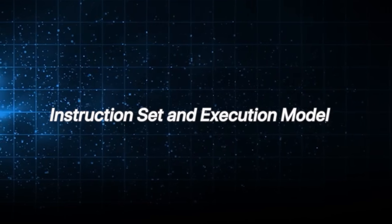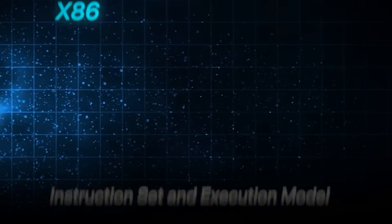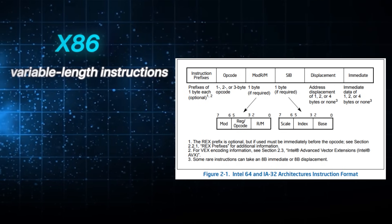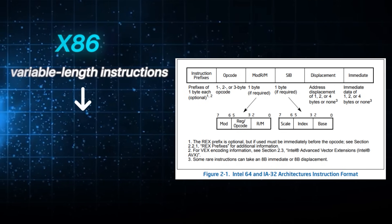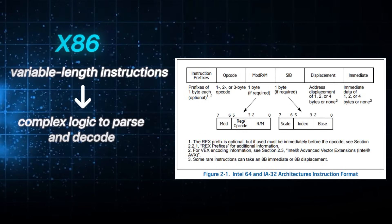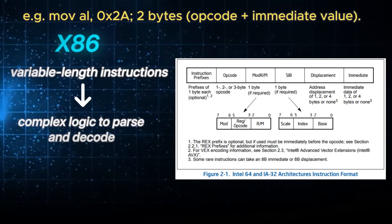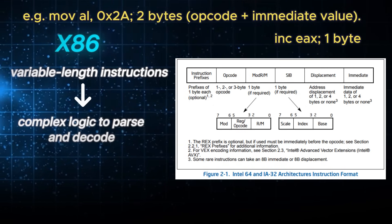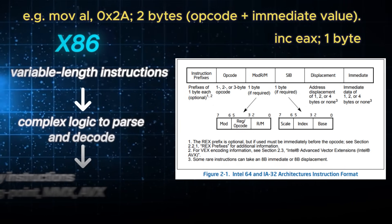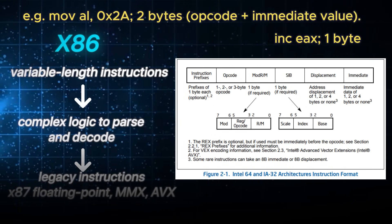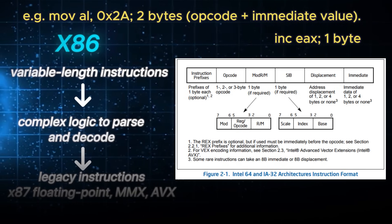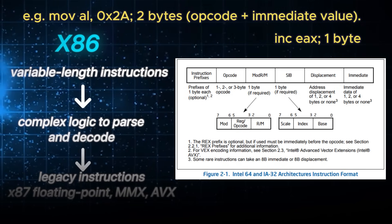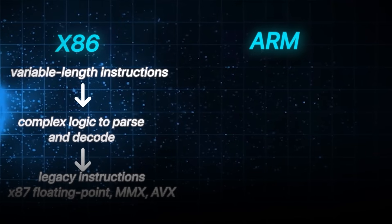Now let's talk about the instruction set and execution model. x86 supports variable-length instructions from 1 to 15 bytes, meaning the CPU must include complex logic to parse and decode them. This variability introduces overhead but allows dense encoding of operations. x86 CPUs also include specialized legacy instructions — for example x87 floating point, MMX, AVX — that can still run for backward compatibility.